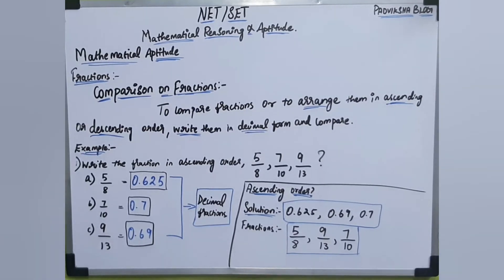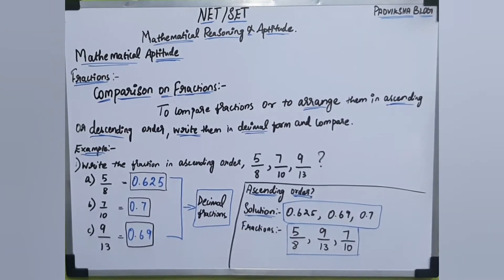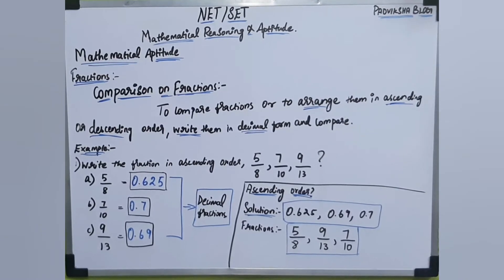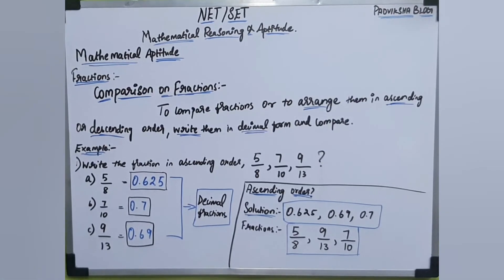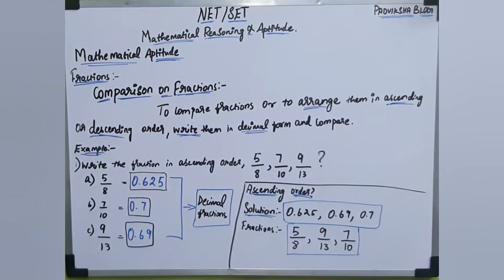Mathematical aptitude includes fractions, percentage, and so on. I'm not sure about this year's question paper analysis, but if you prepare well, you will be in good shape — because in 2018 July, most of the answers came from this area. That's why I'm explaining it clearly and simply.